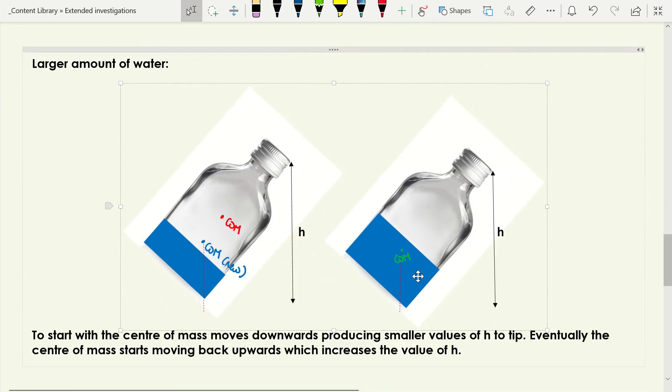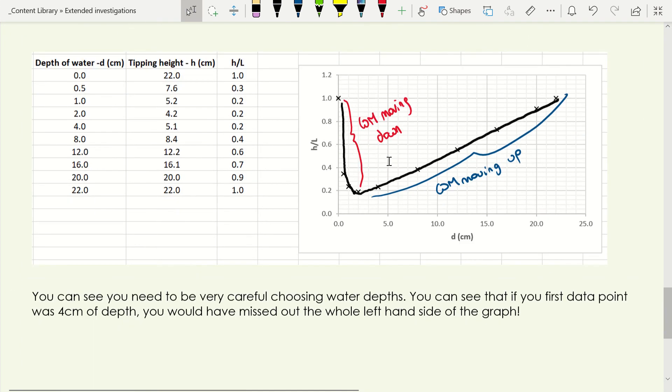As we increase the amount of water from there, the center of mass starts to creep upwards, which gives us bigger values of h in order for it to topple over. When we add small amounts of water, we bring the center of mass down, that's what's going on in this part of the graph. Then we reach a point where as we add more water, the center of mass starts to come back up, and that's why we get this particular shape. You can't actually get Excel to draw this graph because there isn't an equation which models this. There's an equation that describes this downward section and an equation which describes this upward section, but we can't draw one line of best fit for this.